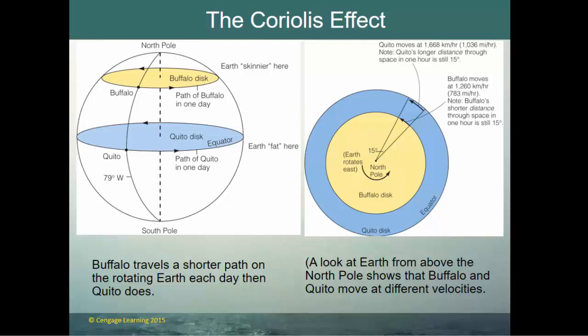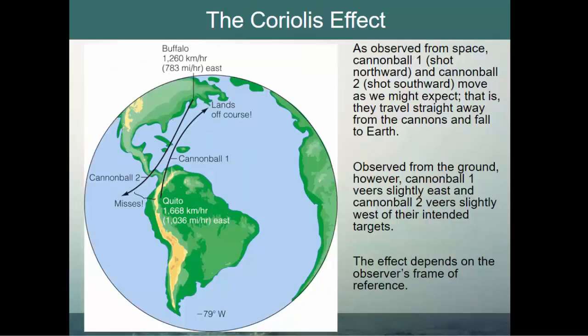Buffalo travels a shorter path on the rotating Earth each day than Quito. As observed from space, a cannonball shot northward travels straight, but from the ground it veers slightly east. In the Northern Hemisphere, the cannonball is deflected to the right. The Coriolis effect depends on the observer's frame of reference — from space the path looks straight, but from Earth it appears deflected to the right.